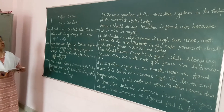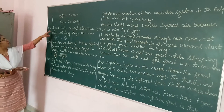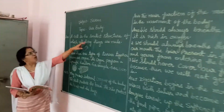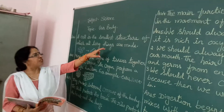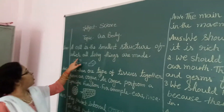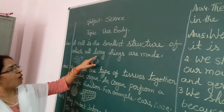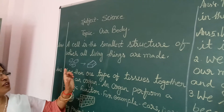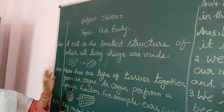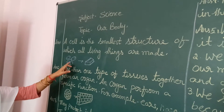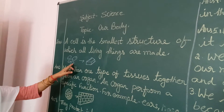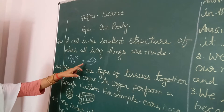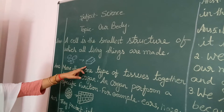What is the cell? You write down: the cell is the smallest structure of which organ means, it is a small structure. It is a cell which is fixed.